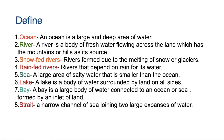Water bodies of the earth — define. An ocean is a large and deep area of water. A river is a body of fresh water flowing across the land which has mountains or hills as its source. Snow-fed rivers are rivers formed due to the melting of snow or glaciers. Rain-fed rivers are rivers that depend on rain for their water. A sea is a large area of salty water which is smaller than the ocean. A lake is a body of water surrounded by land on all sides. A bay is a large body of water connected to an ocean or a sea formed by an inlet of land. A strait is a narrow channel of sea joining two large expanses of water.